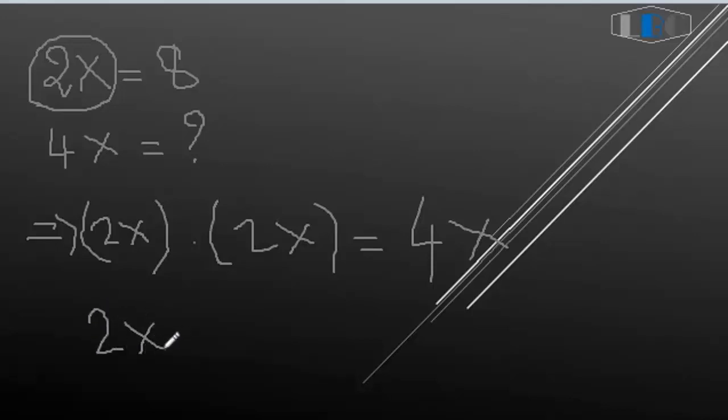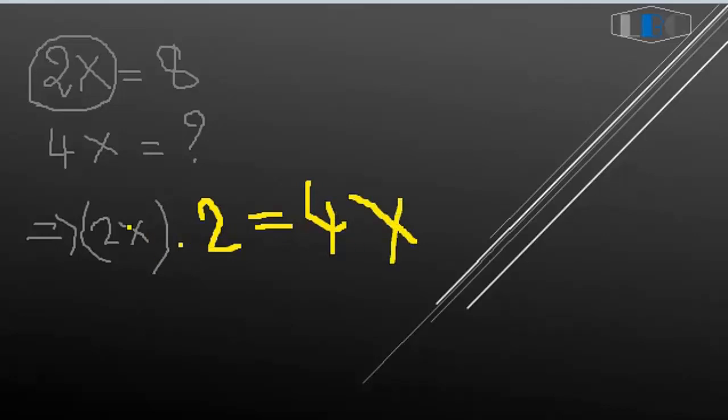2X times 2 equal, okay, 4X. So, okay, 4X. So 8, 4X. Okay, 2X equal 8, so 4X equal 8 and 2, so 8 and 2 equal 16.